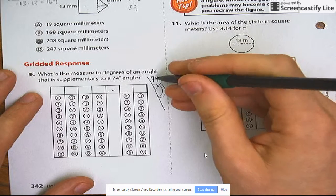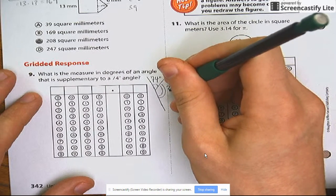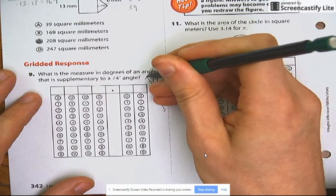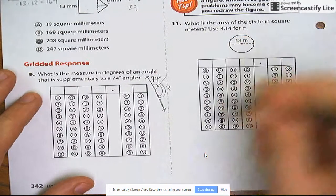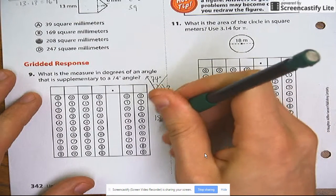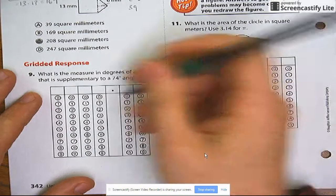Okay. 74 plus, who knows what this angle is. But I know they have to equal 180 because they align on the same line. So I can just do 180 minus 74 to find me the answer. And that'll give me 106 degrees.